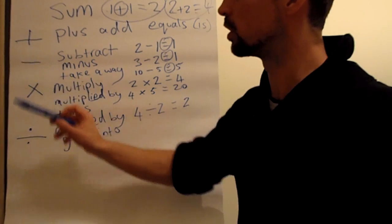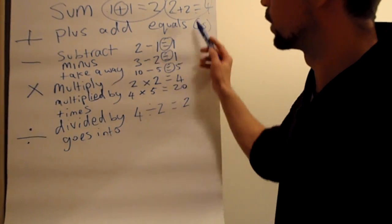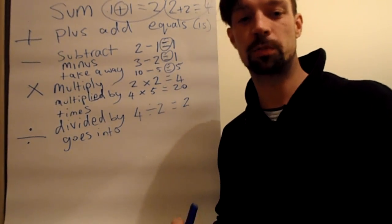So these are the basic five symbols in maths: we have plus, subtract, multiply, divide, and also we have equals.